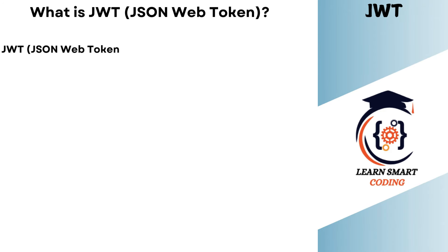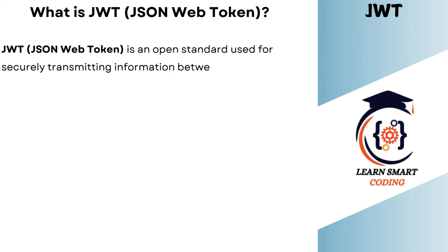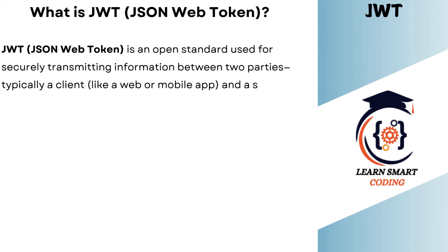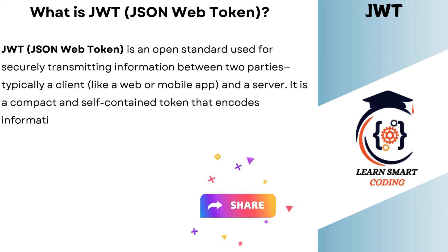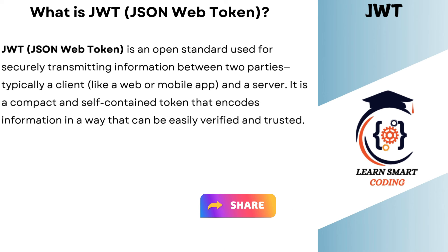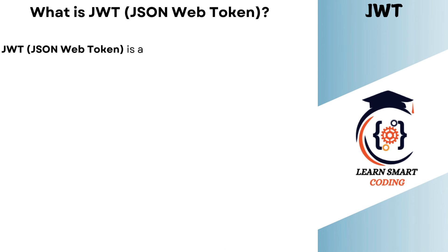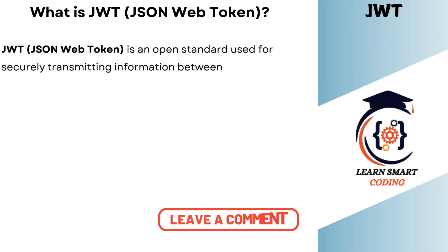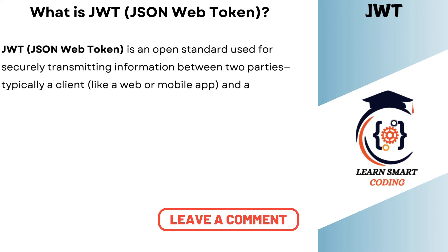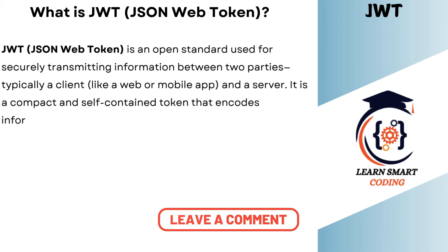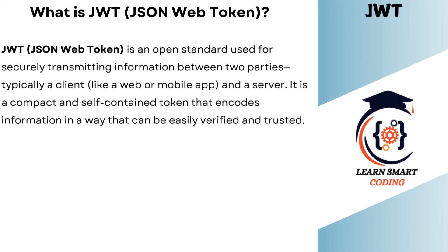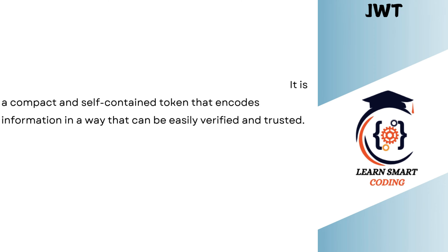What is JWT? JWT stands for JSON Web Token. It's an open standard used for securely transmitting information between two parties, typically a client like a web or mobile app, and a server. It is a compact and self-contained token that encodes information in a way that can be easily verified and trusted.